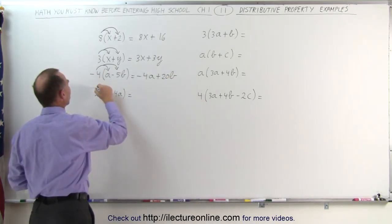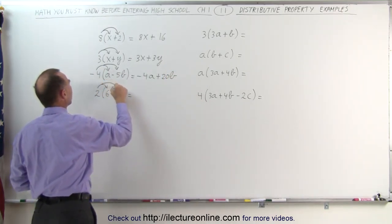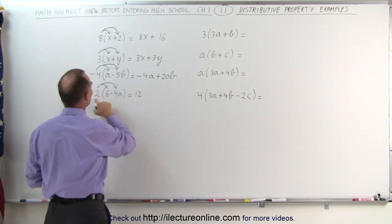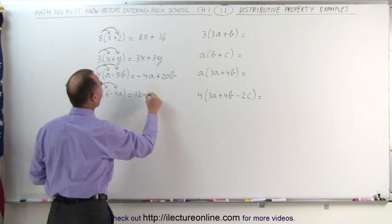Here we're going to multiply the two times six, and the two times the negative four a. Two times six is twelve. Two times the negative four a is a negative eight a.